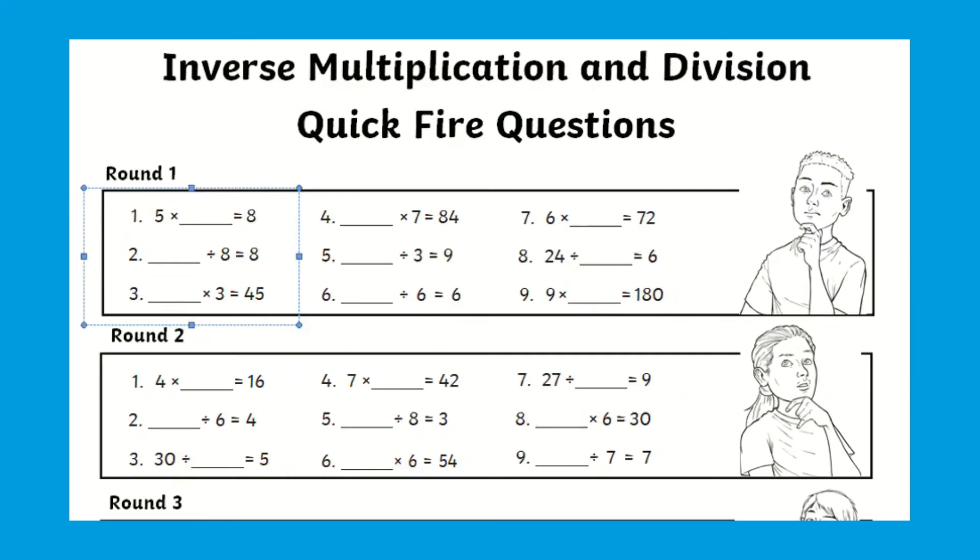You could simply change these calculations to focus solely on a certain times table such as the five times table or even edit rounds to focus on a certain operation for each week.